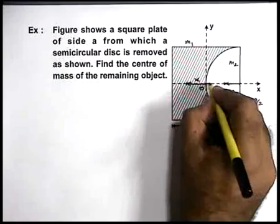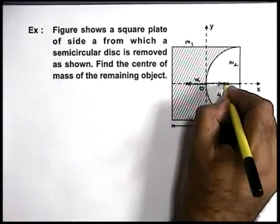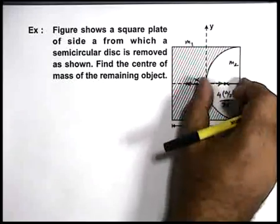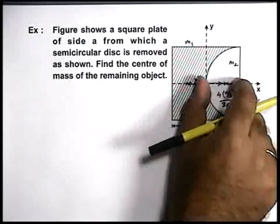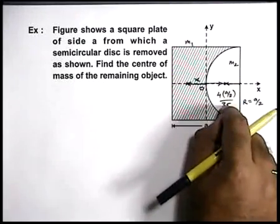So the distance of center of mass of this m2 will be at a distance a by 2 minus 2a by 3π.